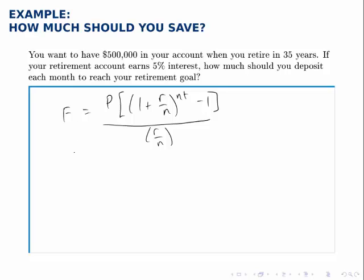Just like before, we'll fill in all the pieces that we know. F is $500,000. P is unknown; that's what we're going to find. All the other pieces: R is 0.05, the 5% interest; N is 12 because we're making deposits monthly; and T is 35 because we're going to retire 35 years from now.